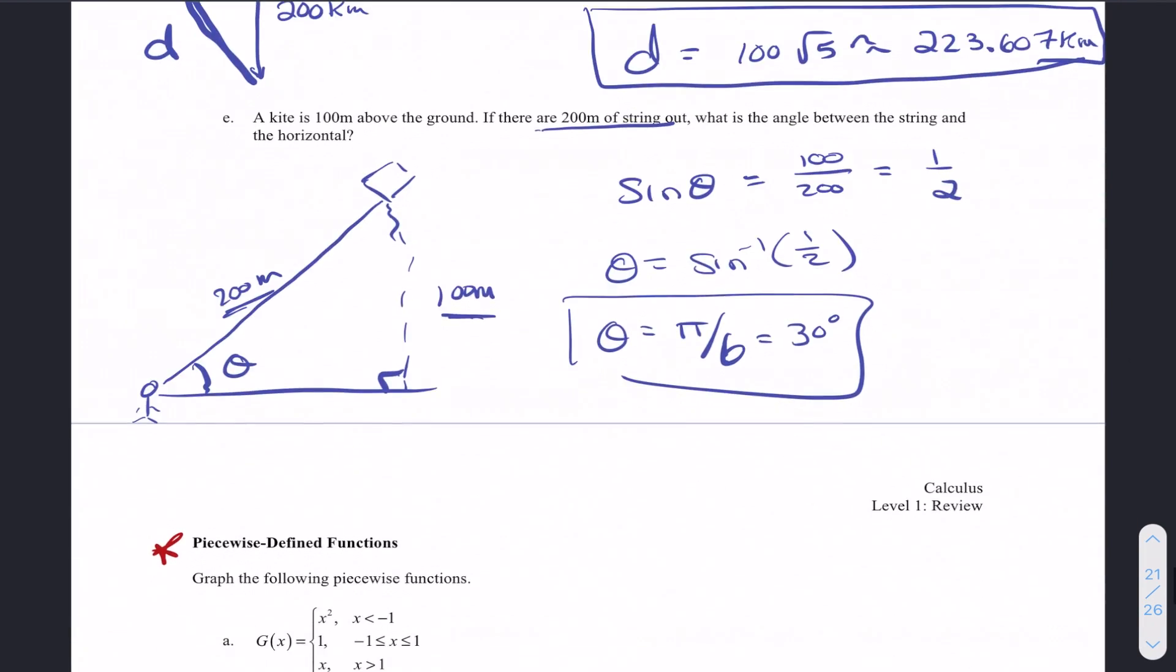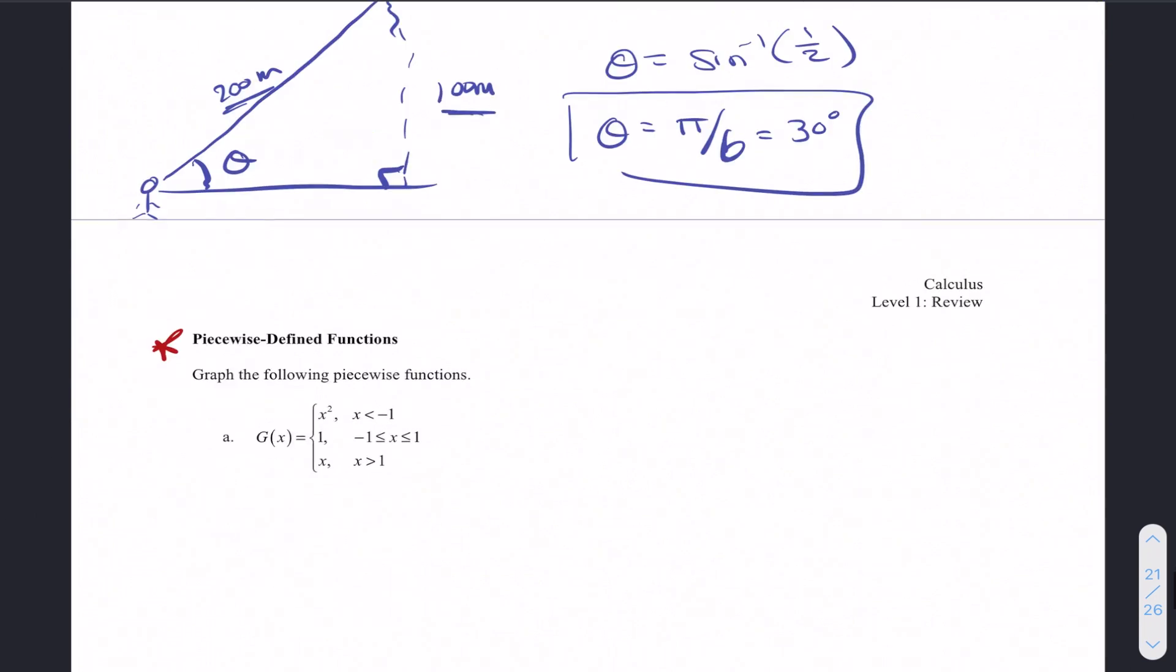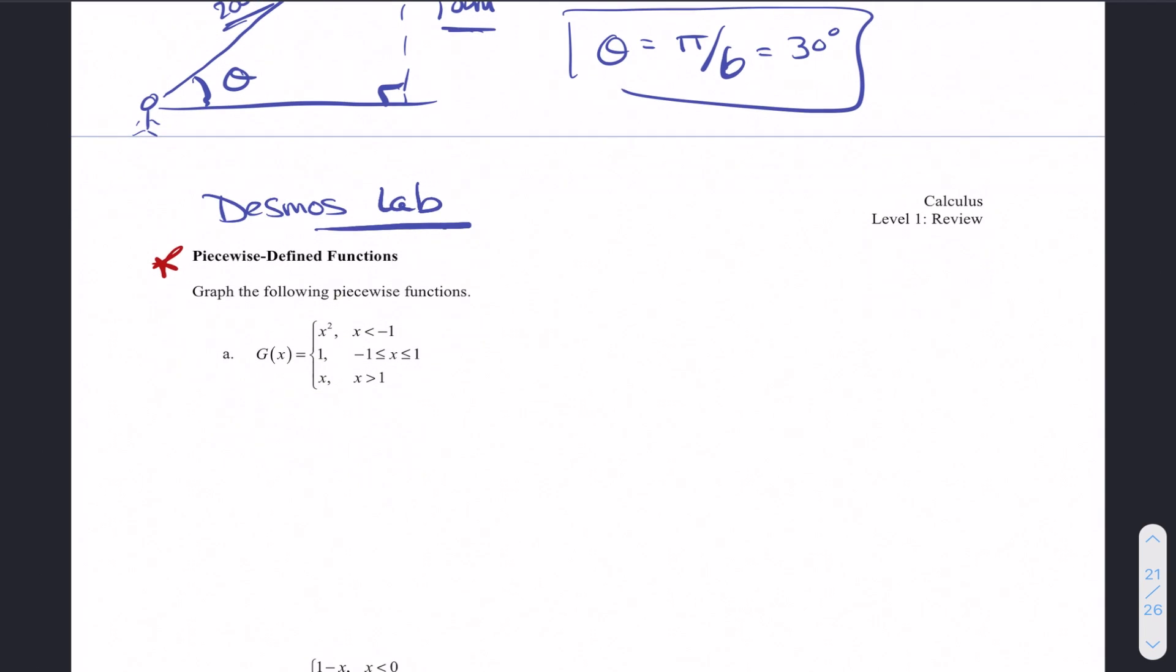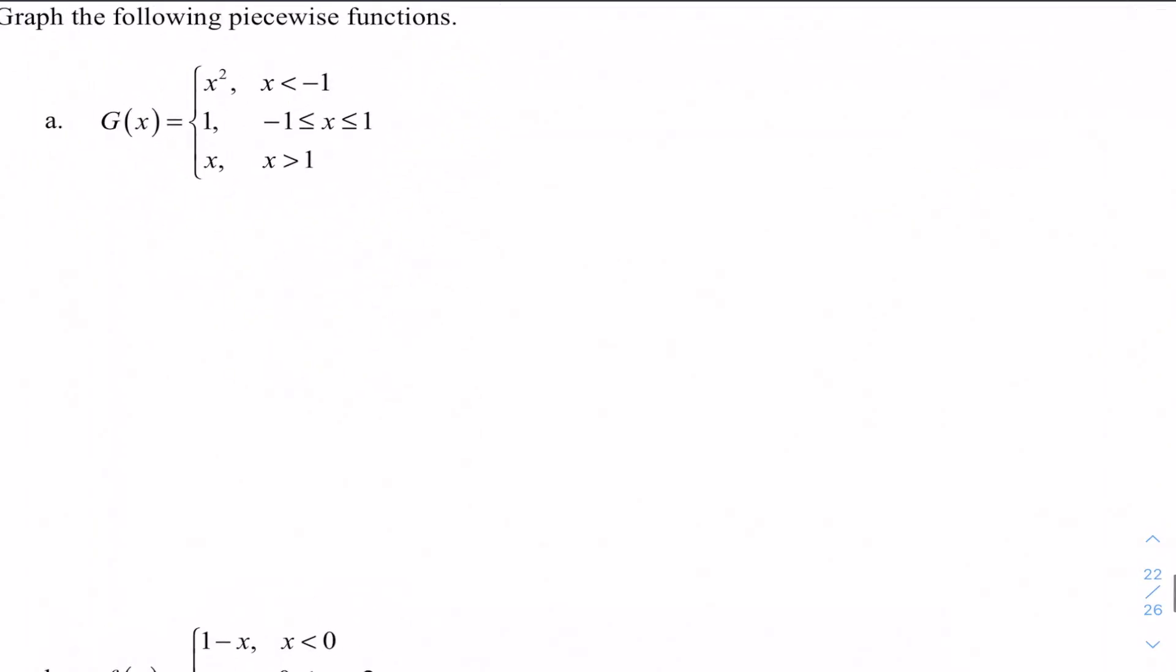Our last concept, and we are going to do a Desmos lab in class for piecewise, is we want to graph things in pieces. That's what the definition of a piecewise graph is. So if we look at g, it has three parts. The inequality part tells you where you would have this shape.